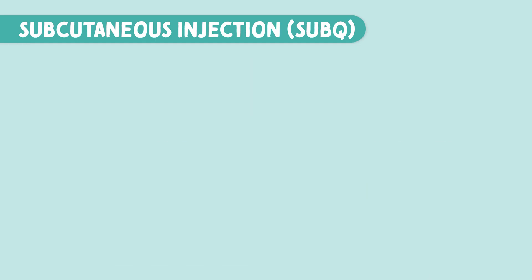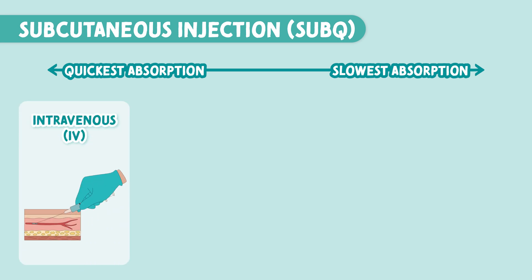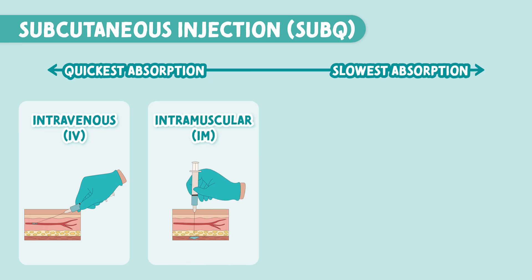Let's look at absorption compared to other injection routes. IV is the quickest route since it goes right into the bloodstream. Next is intramuscular, or IM, which is absorbed quickly through the rich blood supply in the muscles.